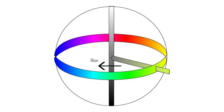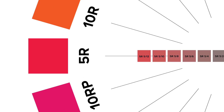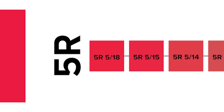Hue is the color name — so red, yellow, etc. Value is its lightness or darkness, and chroma is its intensity. For example, 5R 5/8 describes a medium red at a middle value with bright intensity.